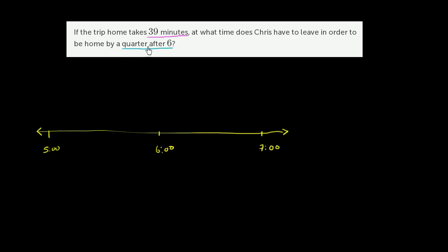They tell us he has to be home by a quarter after 6. So what is a quarter after 6? Well, it's going to be a quarter of the way between 6 and 7 o'clock. So this would be half of the way between 6 and 7 o'clock. And then a quarter would be half of that. So this would be a quarter after 6.